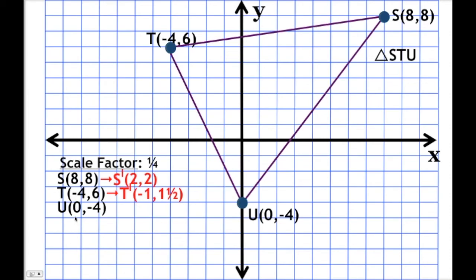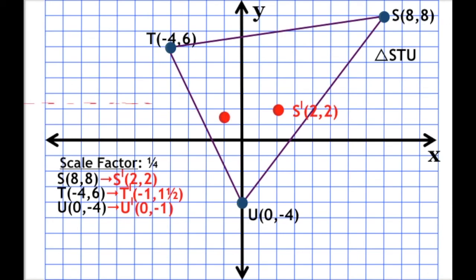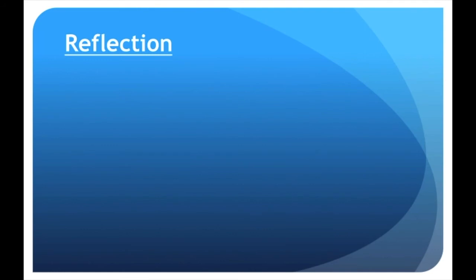Point U is at (0, -4). U prime is going to be 0 times one fourth and negative 4 times one fourth. 0 times one fourth is 0, and negative 4 times one fourth is negative 1, so U prime is at (0, -1). The last thing is to plot our points — S prime, T prime, and U prime — connect them, and that's our new triangle. The scale factor was one fourth, so our new figure is about one fourth the size of our original.